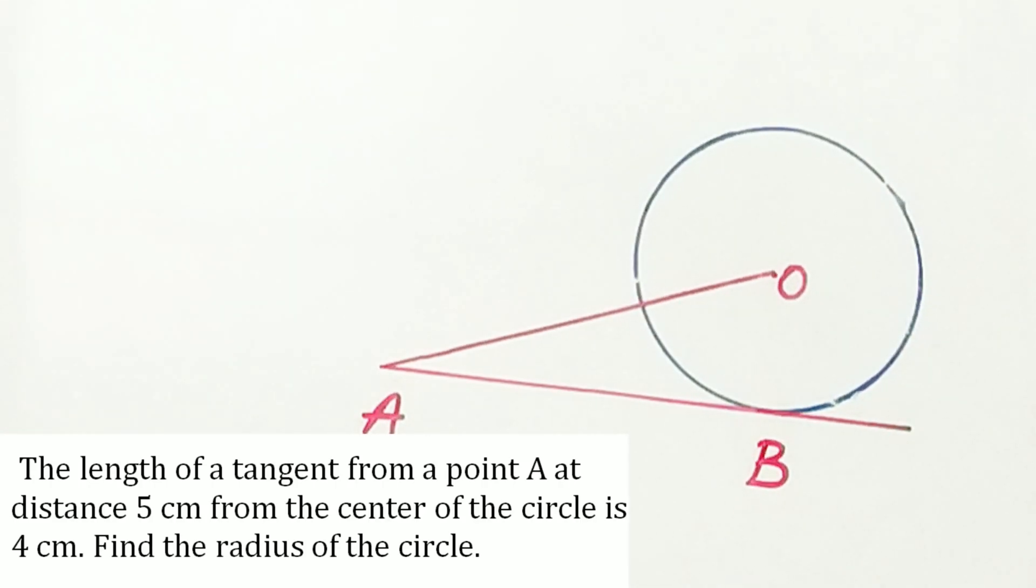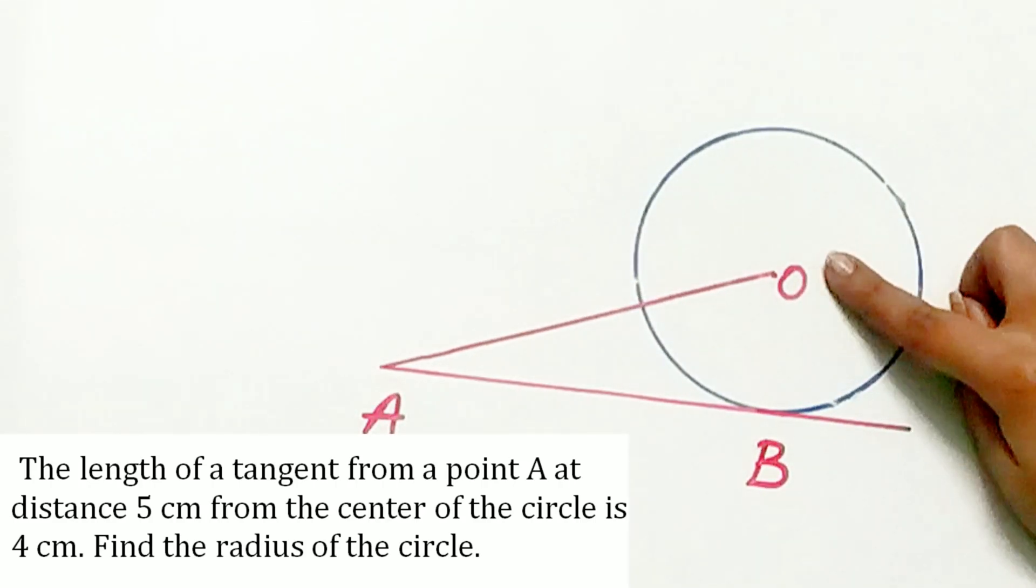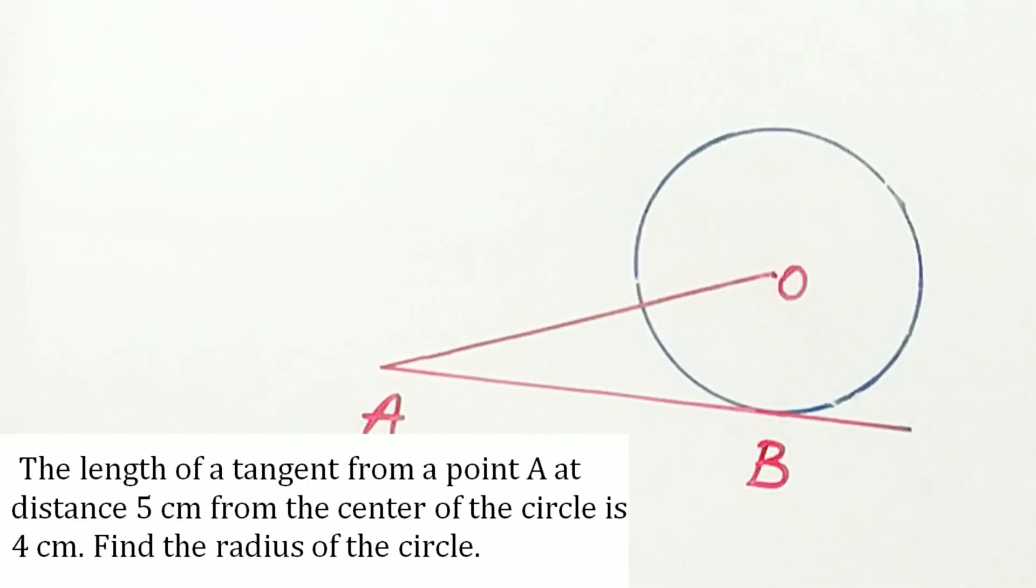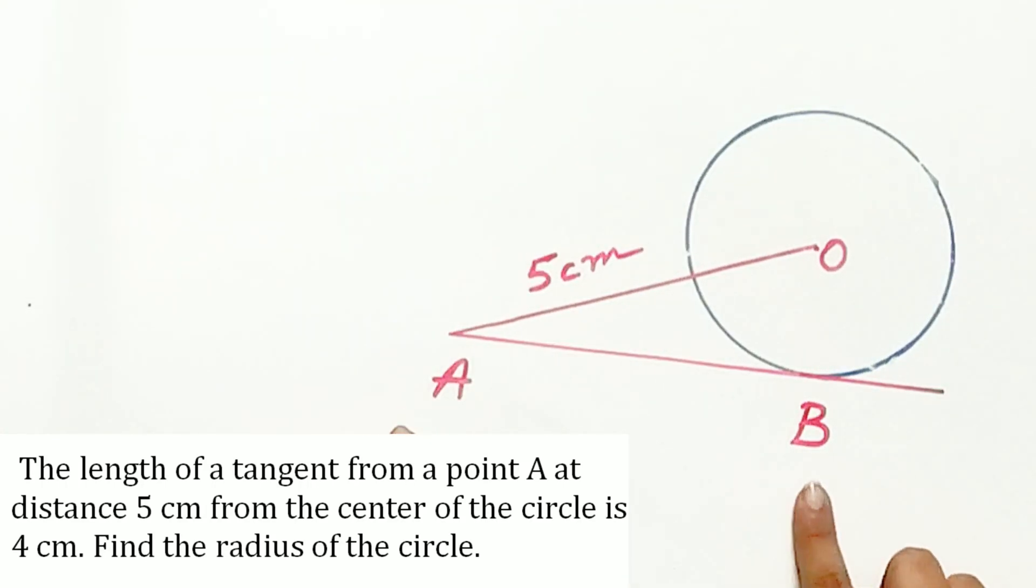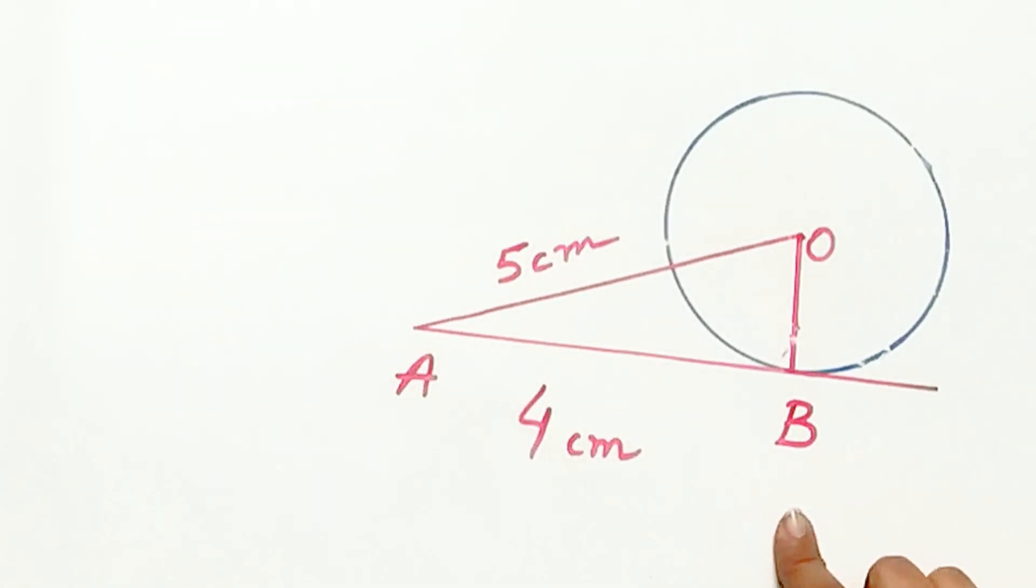According to question, distance between the center and the point A is 5 cm and the length of tangent is 4 cm. We have to find OB.